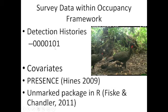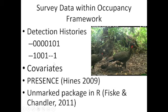The detection history continues: no detection on day six, detected again on day seven. Our assumption is the guan was present all seven days; we just failed to detect it on five of them. Occupancy models can also handle missing data — if a leaf fell over the camera lens on days five and six, that's simply treated as missing data in the analysis, and the lens blowing clear on day seven allows detection to resume.